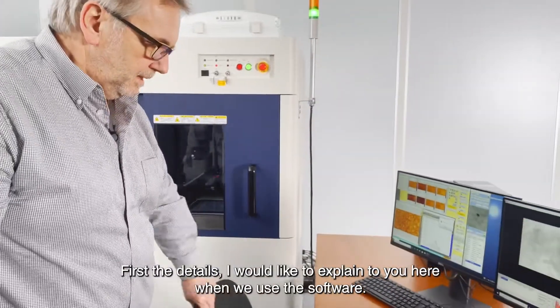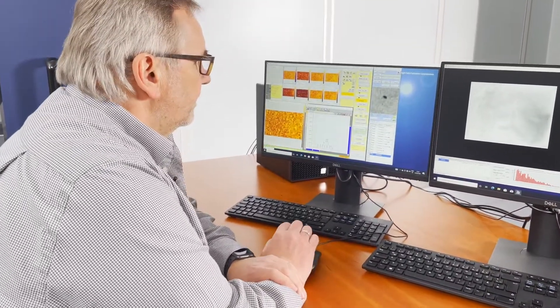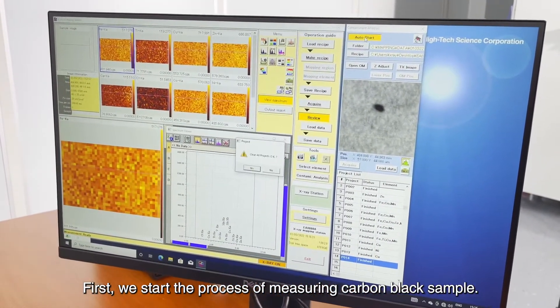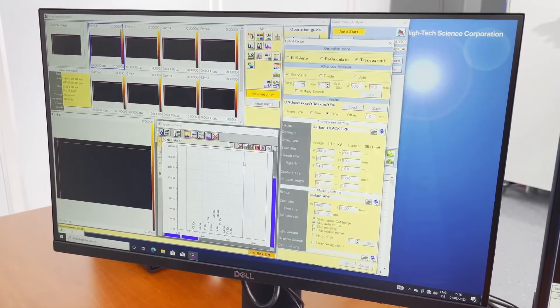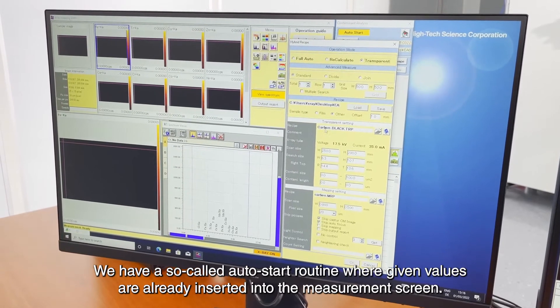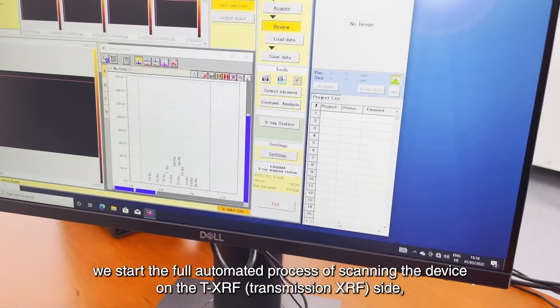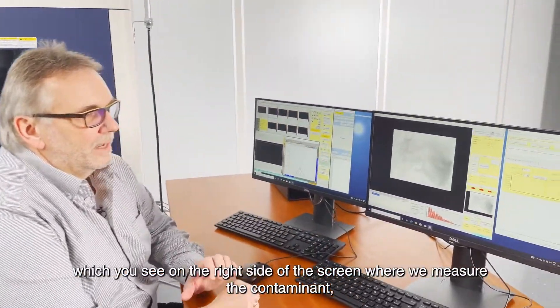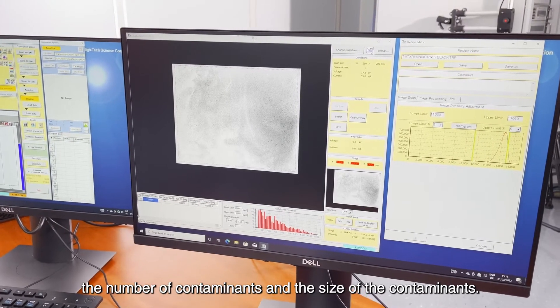Further details I would like to explain you here when we use the software. First we start the process of measuring a carbon black sample. We have a so-called auto start routine where given values are already inserted into the measurement screen. And by simply clicking OK here we start the full automated process of scanning the device on the TXRF side which you see in the right side of the screen where we measure the contaminant number of contaminants and the size of the contaminants.